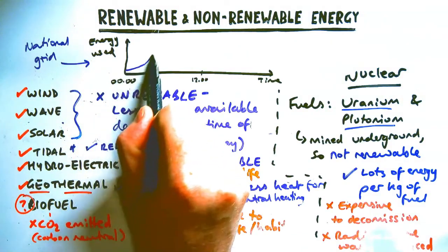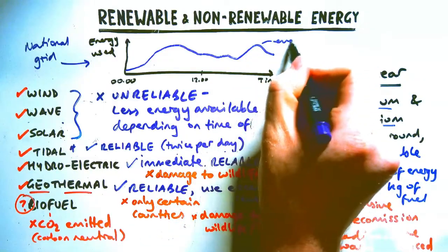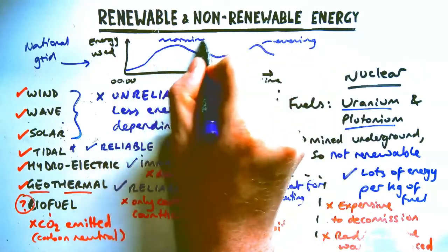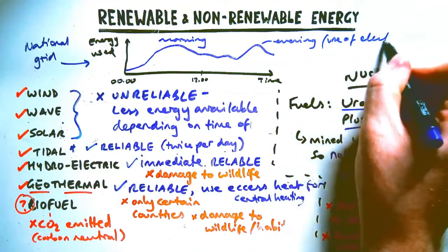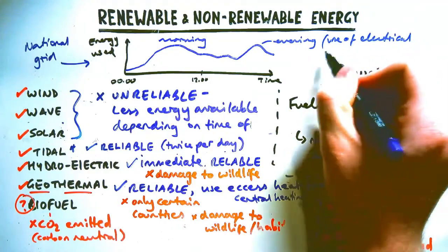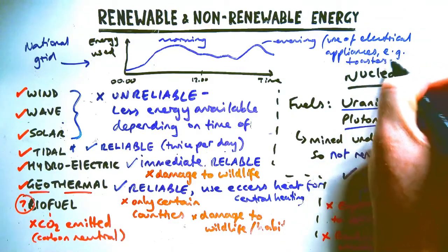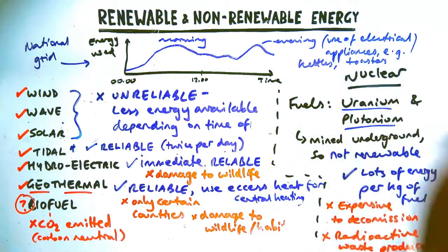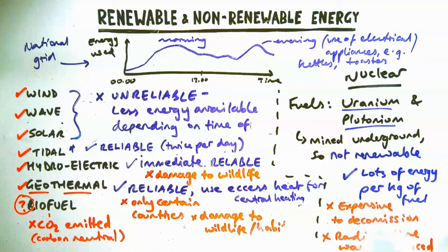Finally, regarding how energy is used in the national grid: energy demand in a country like the UK varies over the course of the day, generally being highest in the morning and the evening. This is because people are using electrical appliances like toasters and kettles that they wouldn't use in the middle of the night or during the day when they're at work. That covers renewable and non-renewable energy.